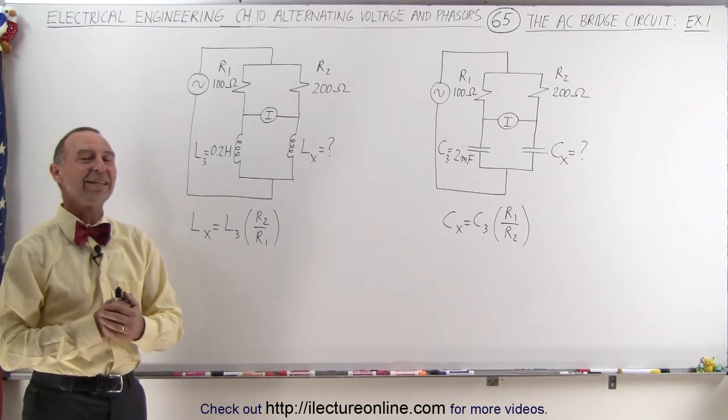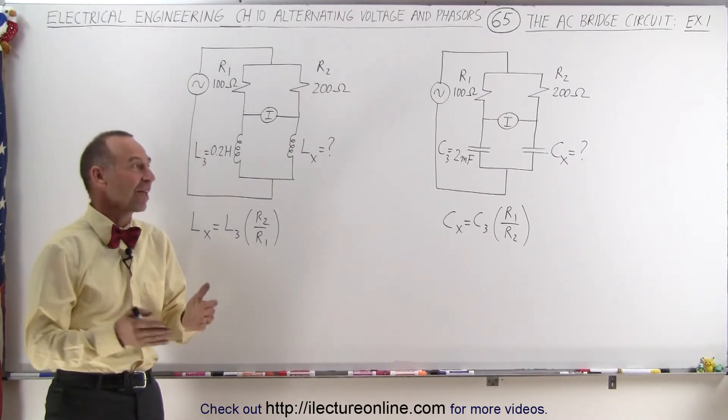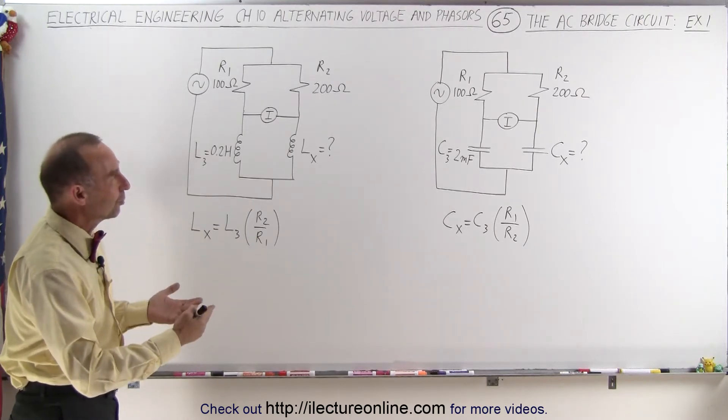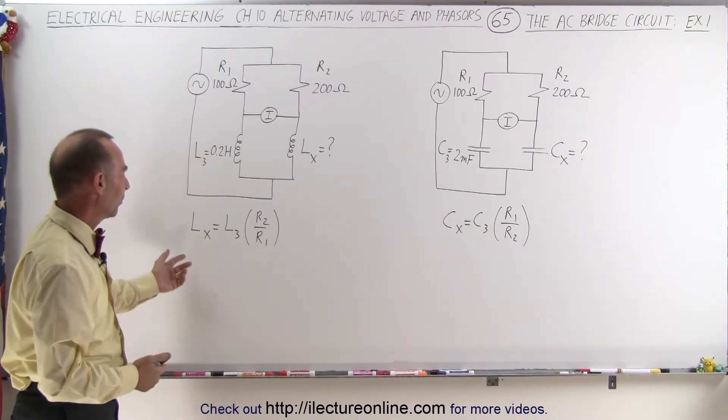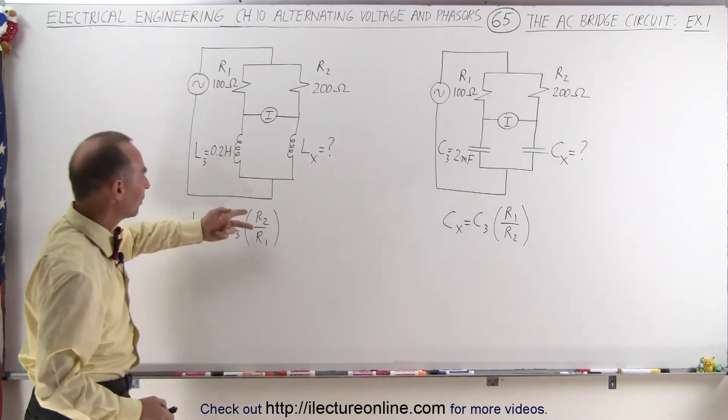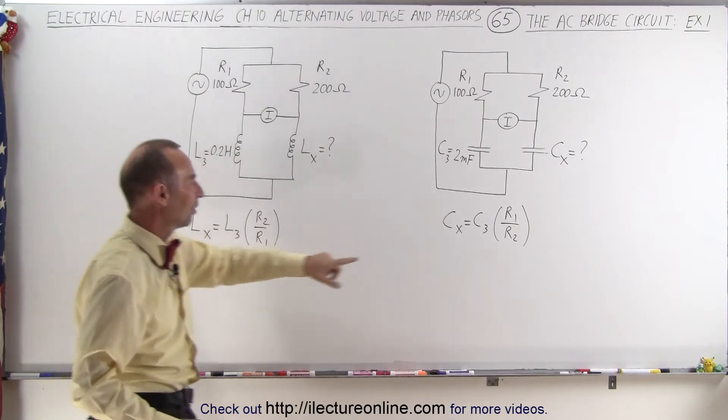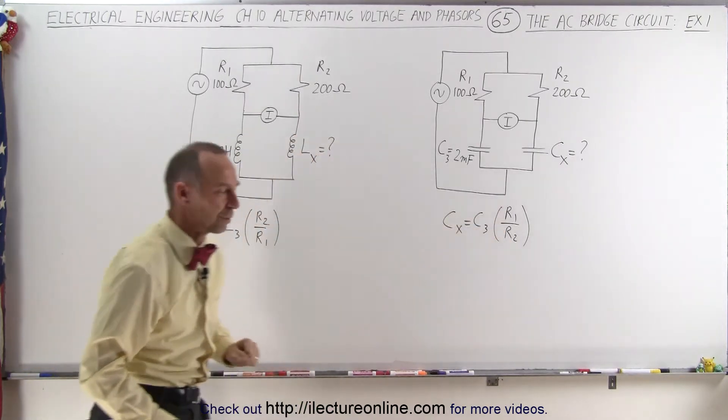Welcome to ElectronLine. Now let's do a couple of simple examples trying to find the unknown inductor and the unknown capacitor using the AC bridge circuit. We've discovered these equations. Notice the reversal of the ratio of R2 to R1 for inductors and R1 over R2 for capacitors.